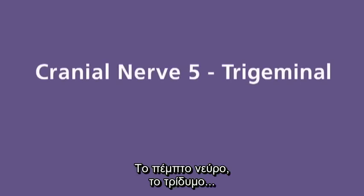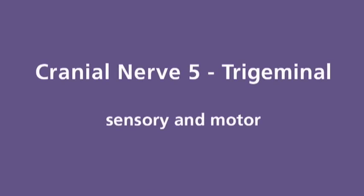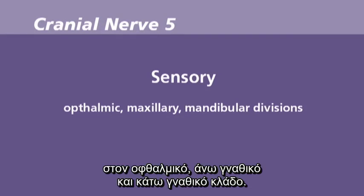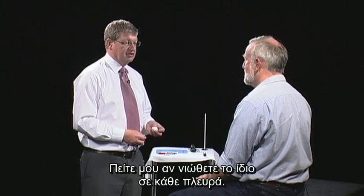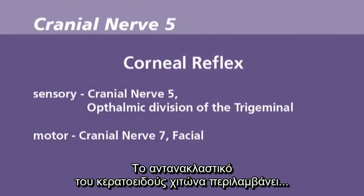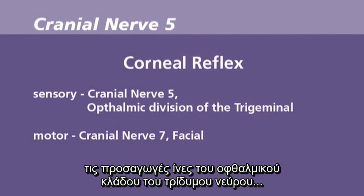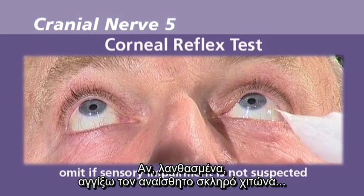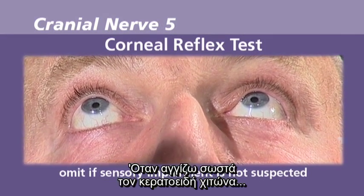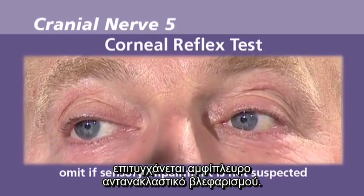The fifth nerve, the trigeminal, has both sensory and motor components. Light touch sensation is tested in the ophthalmic, maxillary, and mandibular divisions. I'm now going to test the sensation on your face — I'd like you to tell me if it feels the same on each side. The corneal reflex involves afferent fibres from the ophthalmic division of the trigeminal nerve and efferent fibres for the facial nerve.